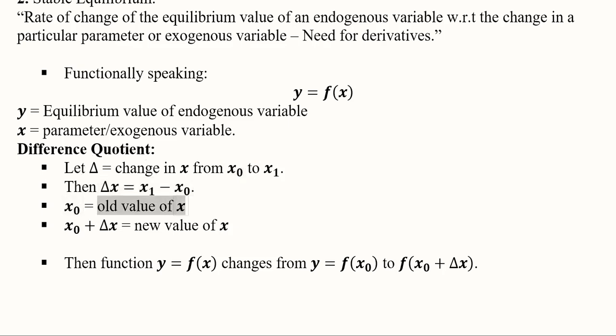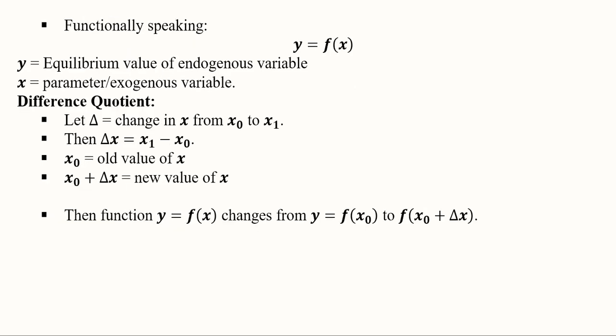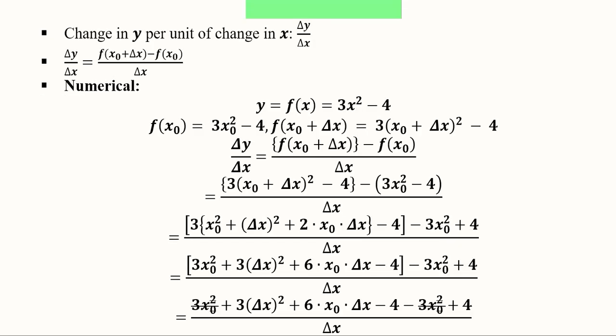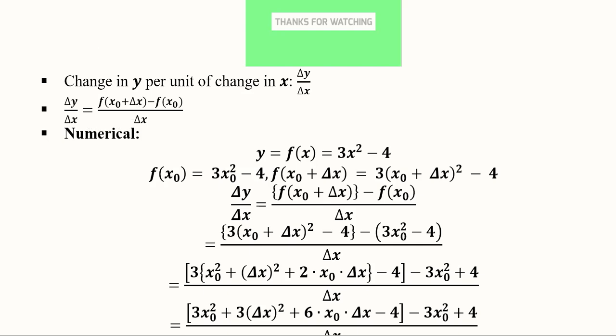x0 is the old value of x, and the new post-change value is x0 plus delta x — the initial value plus some increment gives us the new value. The function y changes from the initial function to the post-change function. The change in y per unit of change in x tells us how y will change for a per-unit change in x.